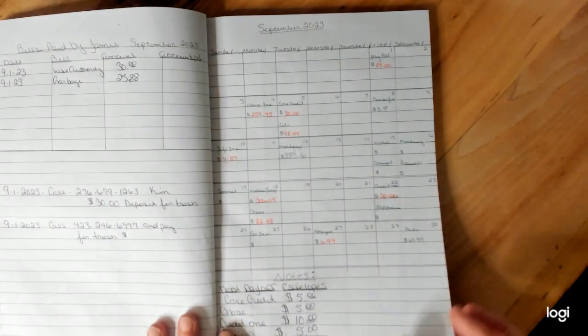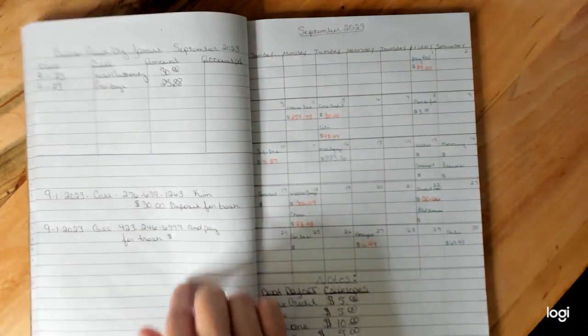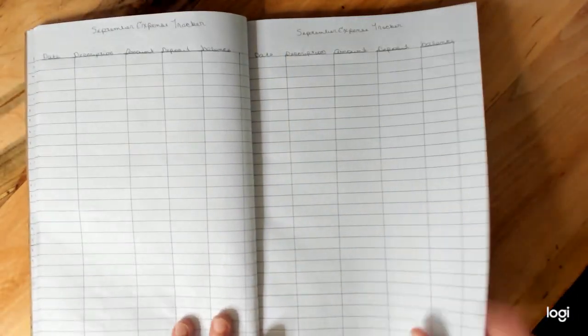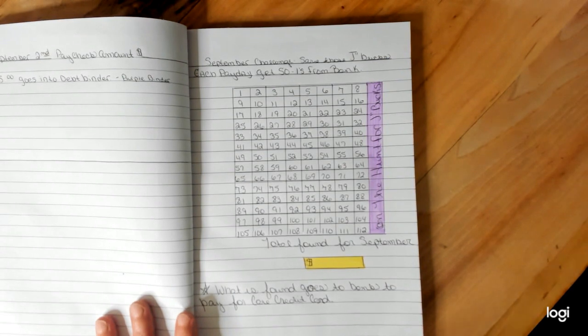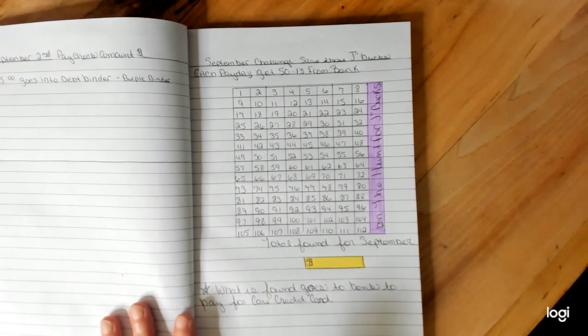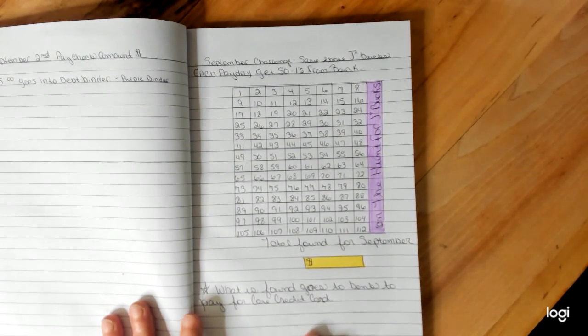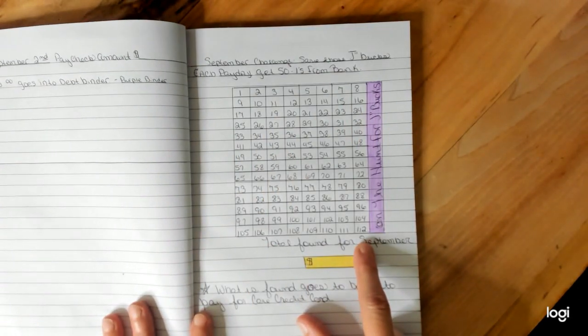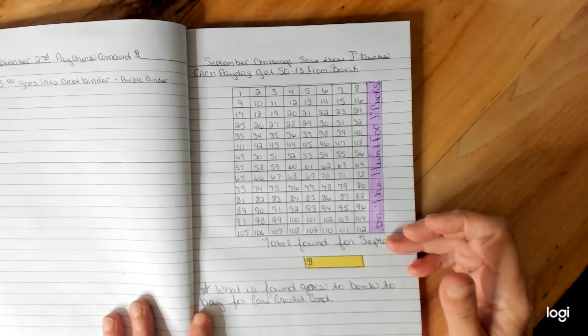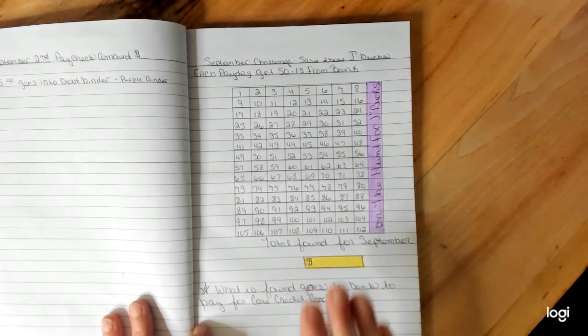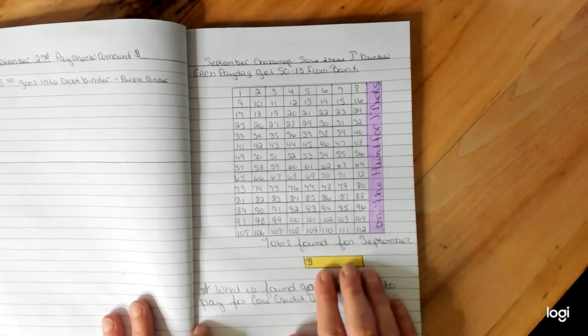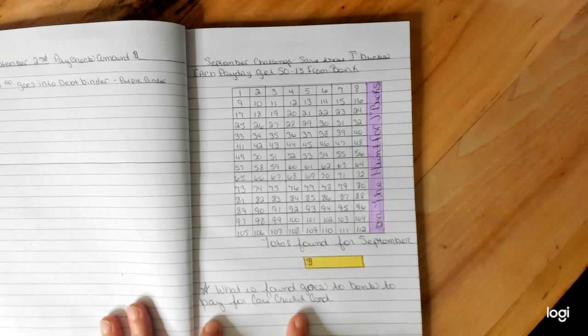And what I came up with is September challenge is save the J bucks. So each time I get paid, I'm going to go to the bank and I'm going to get $1 bills and I'm going to search for the J bucks. I have an opportunity to save 112 of them through the month. Whatever I find in September, at the end of September, I'm going to put all that into the bank and make a payment towards my Pair credit card. And I'm hoping and praying that it all goes good.